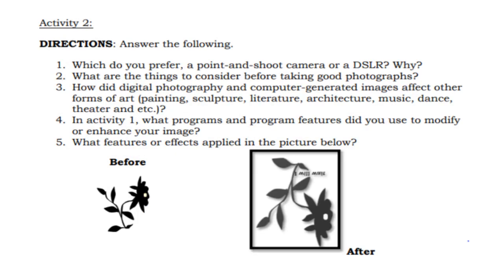Activity 2. Directions: Answer the following. Which do you prefer, a point-and-shoot camera or a DSLR? Why? What are the things to consider before taking good photographs? How did digital photography and computer-generated images affect other forms of art like painting, sculpture, literature, architecture, music, dance, theater, etc.? In activity 1, what programs and program features did you use to modify or enhance your image? What features or effects were applied in the picture below?